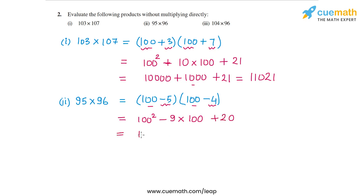So I am left with 10,000 minus 900 plus 20. So 10,000 minus 900 is 9,100 plus 20 is 9,120. This is the answer to the second part.